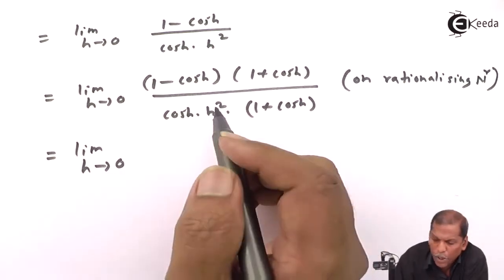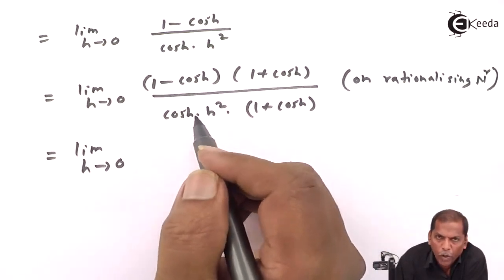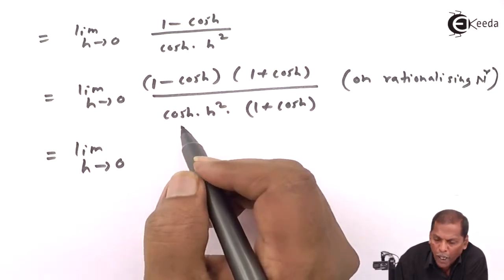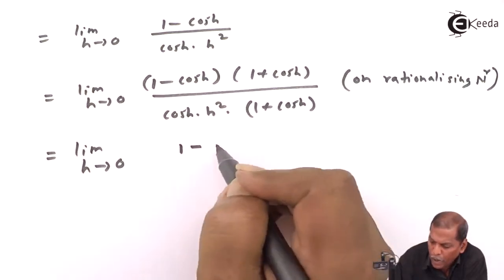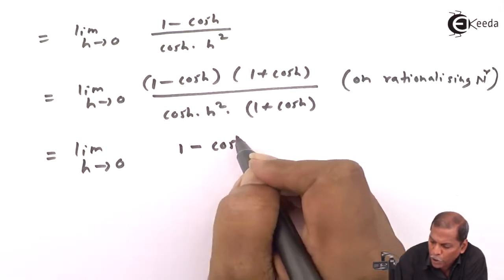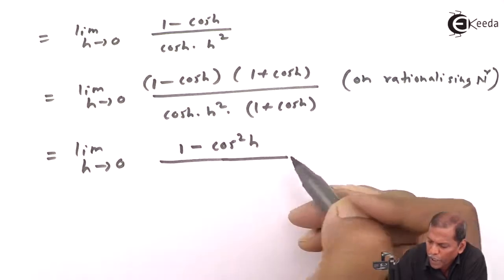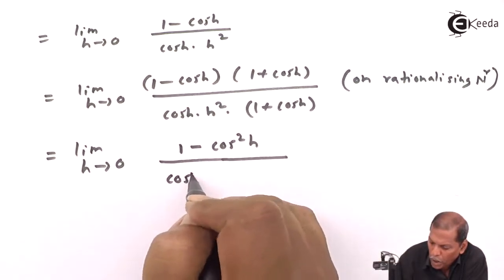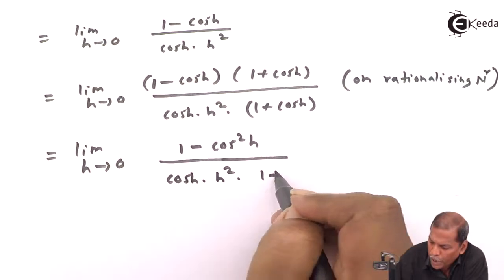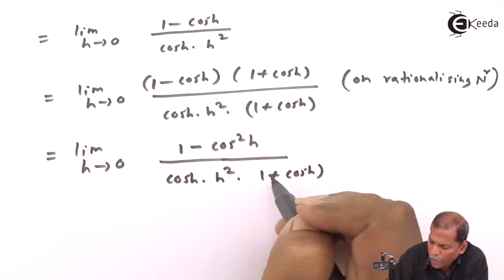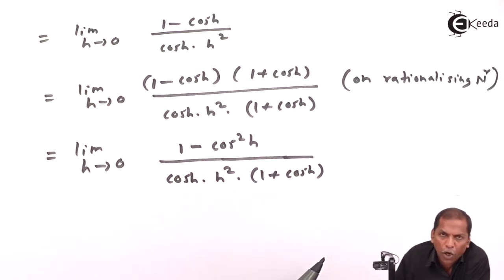Using the identity (a - b)(a + b) = a² - b², we get 1² - cos²h = 1 - cos²h in the numerator, upon cos h times h² times (1 + cos h) in the denominator.